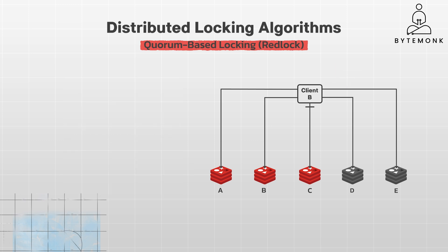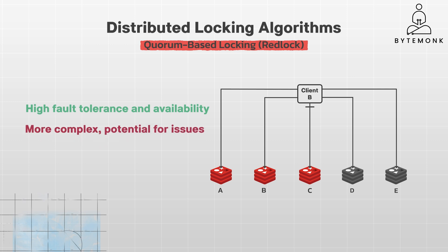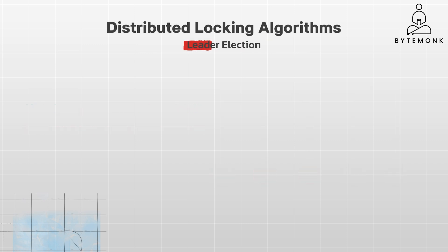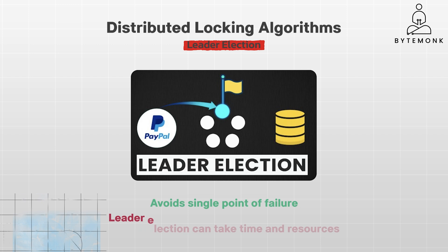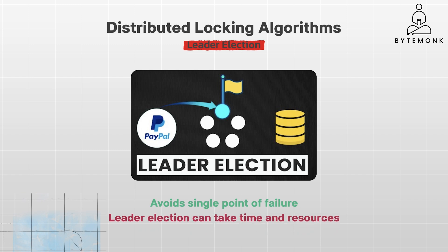This prevents a single point of failure and increases the system's resilience. So basically, it aims for high fault tolerance and availability. However, this approach is more complex, and there is potential for issues with clock synchronization between nodes, which has been a subject of debate. In the leader election algorithm, nodes elect a leader and the leader is responsible for granting locks. It avoids a single point of failure, but can be complex to implement and leader election can take time and resources.